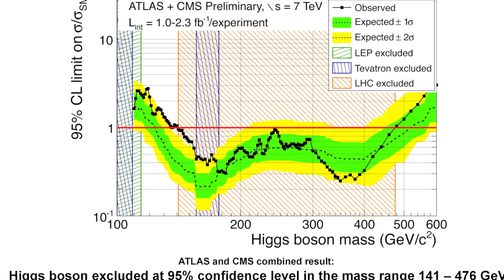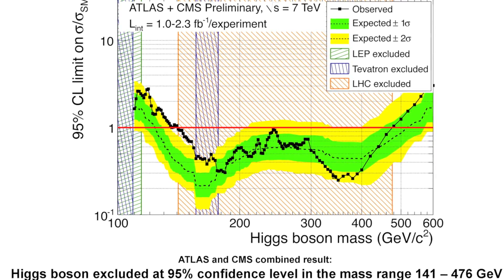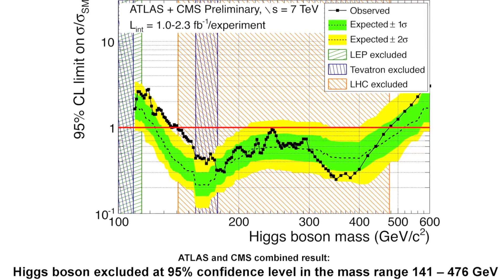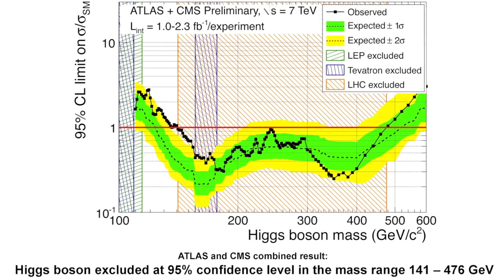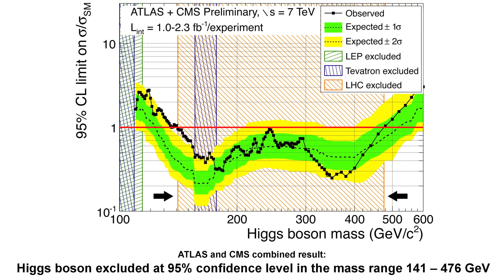The ATLAS plus CMS combination has excluded a much larger region of Higgs boson masses than the previous experiments. You can see from this plot that the black line is the limit we set on the amount of signal. When it goes below the red line at one, we are excluding the standard model Higgs. The region excluded by LHC is this white-orange region, while the previous experiments only excluded a narrow region here and two narrow regions here.